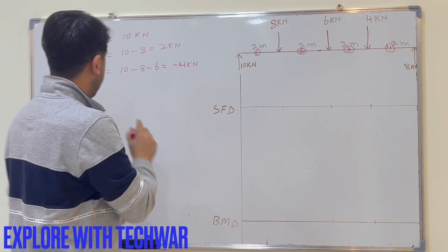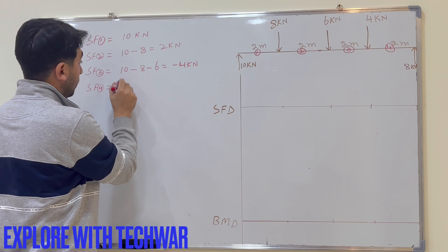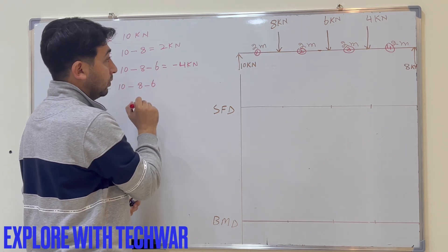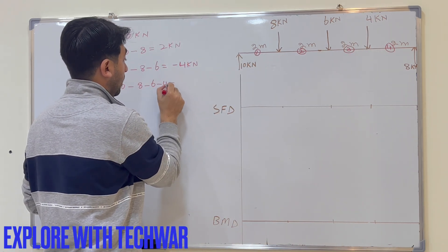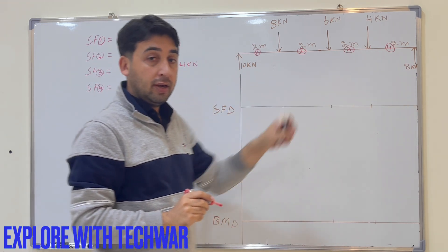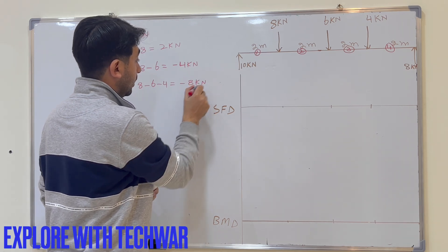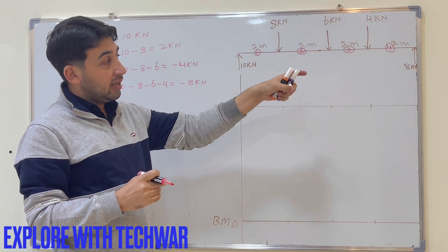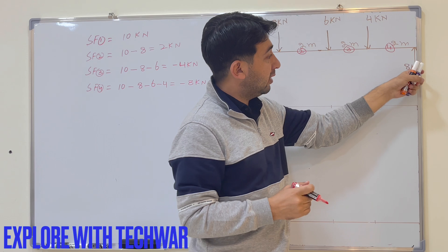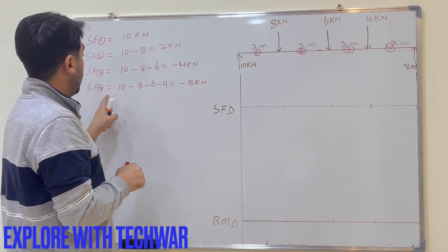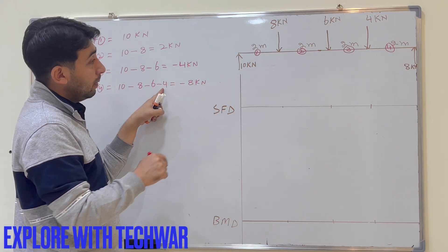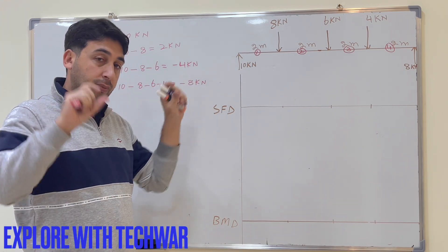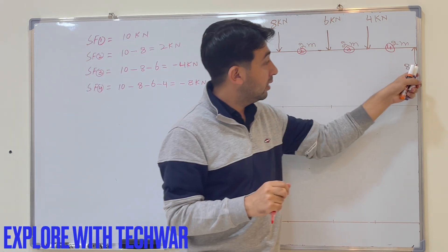Shear force at section four: taking all forces on the left side — 10 minus 8 minus 6 minus 4 equals minus 8 kN. At the final support, we also add the 8 kN reaction upward, so minus 8 plus 8 equals zero. That's why the shear force diagram returns to zero at the right support.